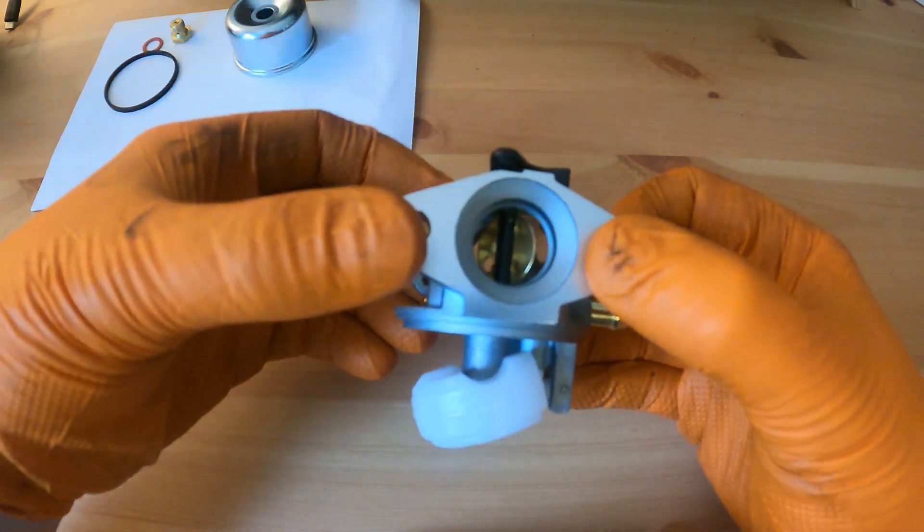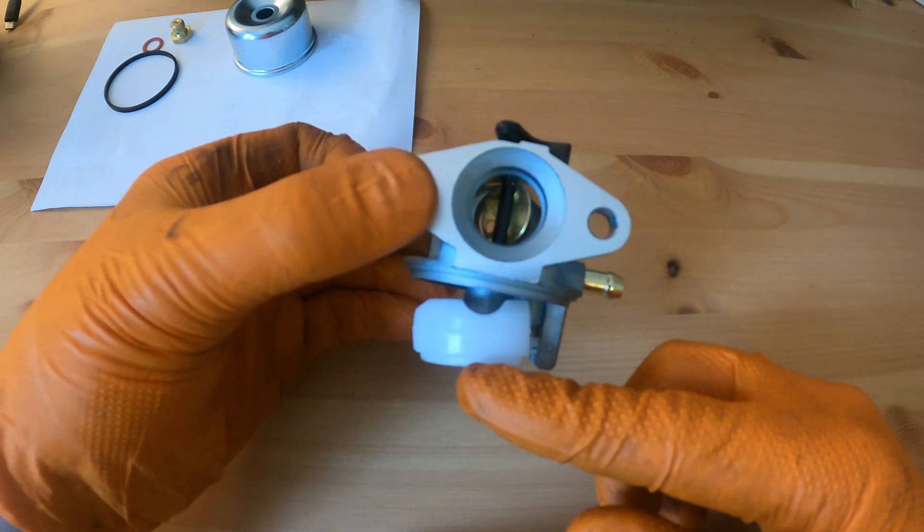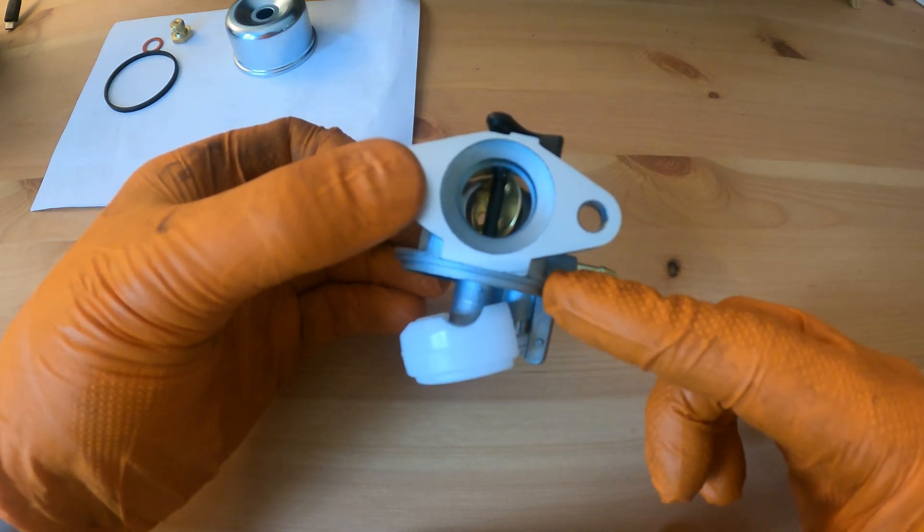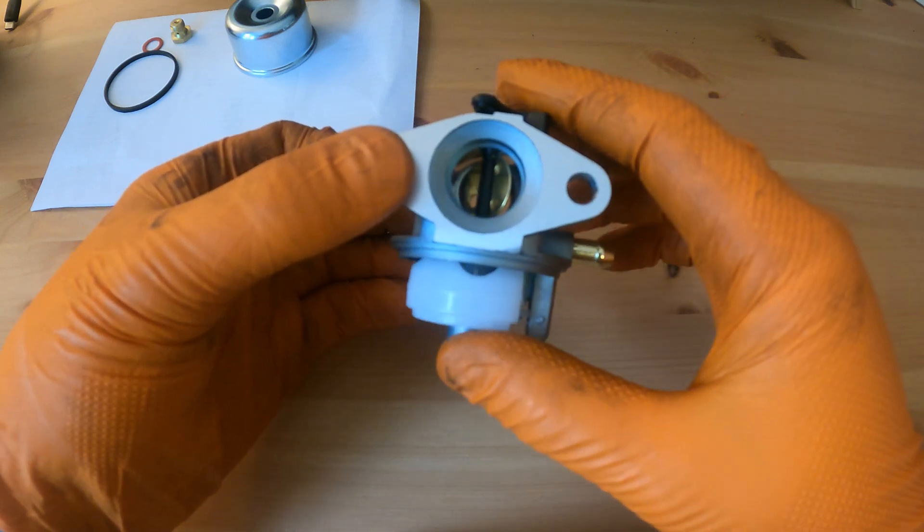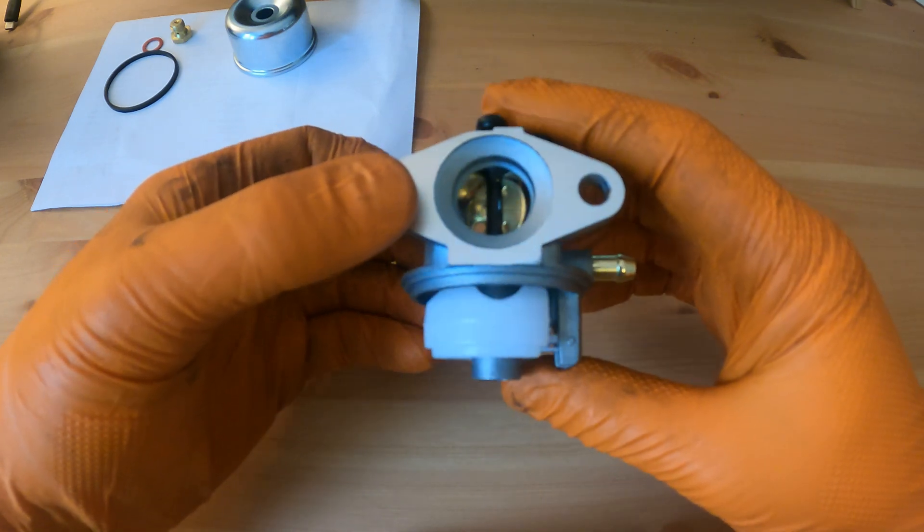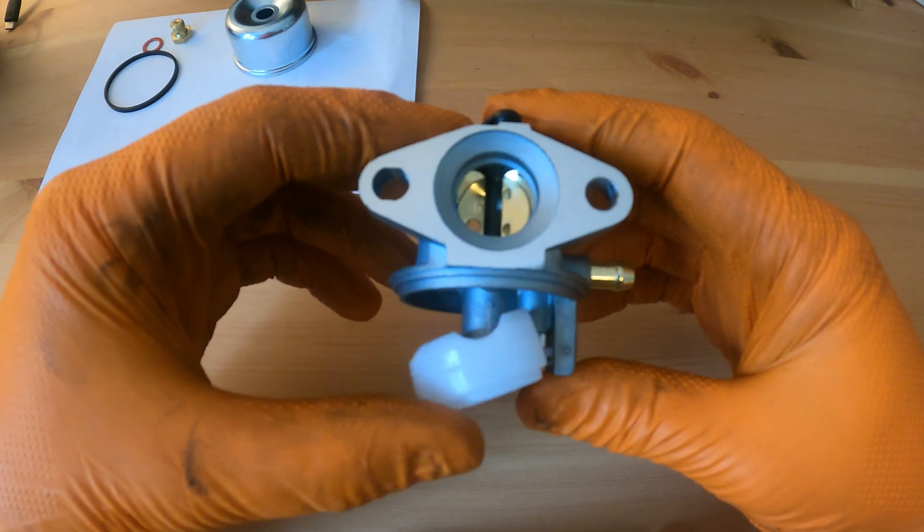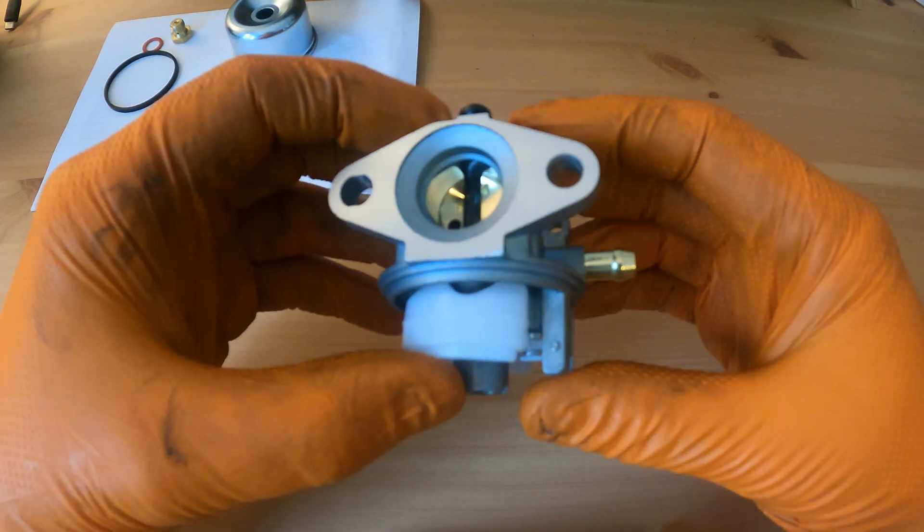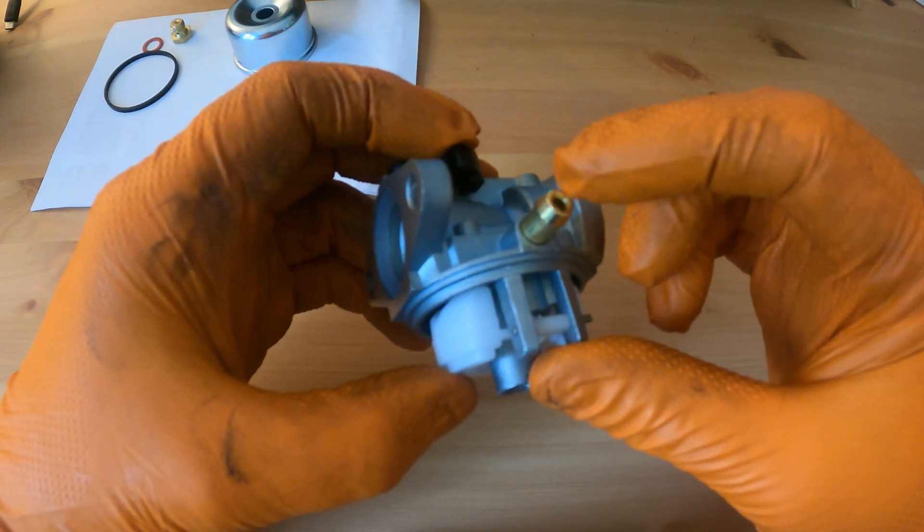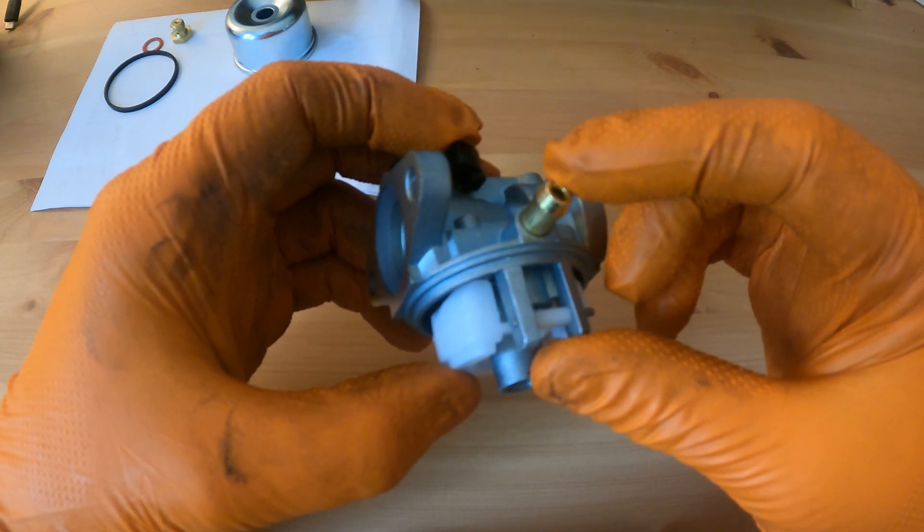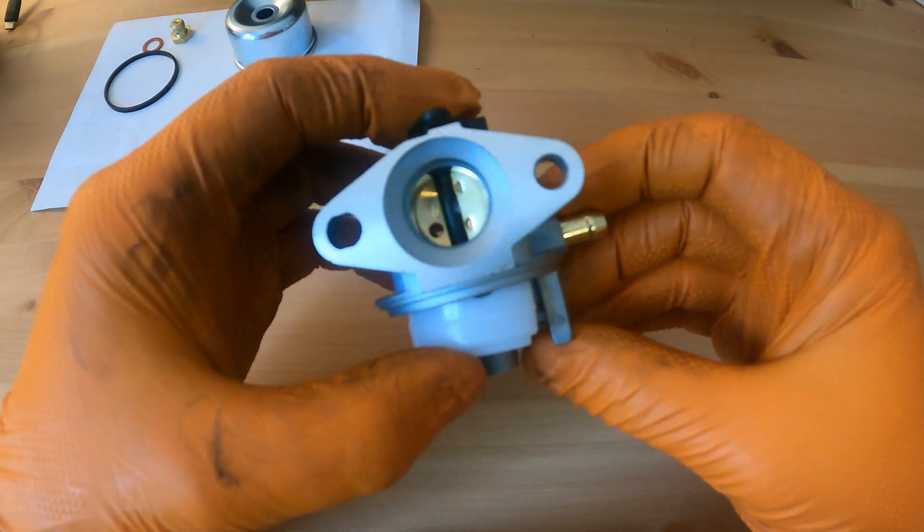So that's the carb empty of fuel. As the fuel rises the float comes up and that needle will then seat on that seat and stop the fuel coming in. If you wanted to test this to make sure it was seating properly, just lightly press up on the float and blow through there. You shouldn't be able to blow through. If you can blow through without restriction then you've got wear on either the seat or the needle.